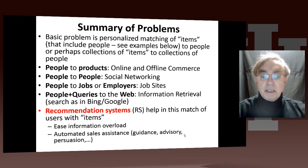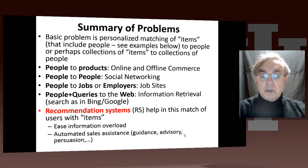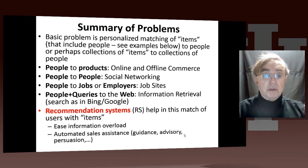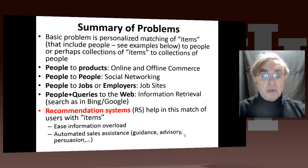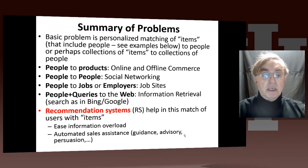The recommender systems help in the match of users with these items. Their goal is to give good recommendations, which ease the information overload. Because if you browse everything you could do, you wouldn't be able to do very much. And it's, in some sense, like automated sales systems — it's guidance, advisory, or it could be persuasion. There are many things it can be.